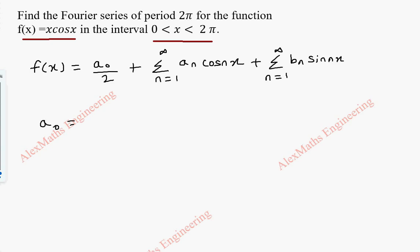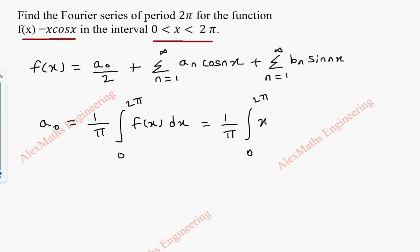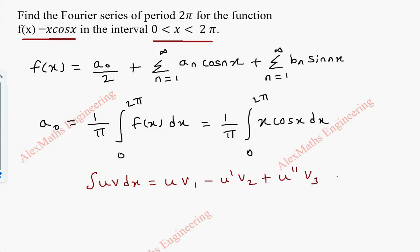Now to find a0, we use (1/π)·integral from 0 to 2π of f(x) dx, and here we substitute f(x). So it becomes (1/π)·integral from 0 to 2π of x·cos(x) dx. We are going to use Bernoulli's formula for integrating: ∫u·v dx = u·v1 − u'·v2 + u''·v3 − ⋯, where x is u and cos(x) is v.